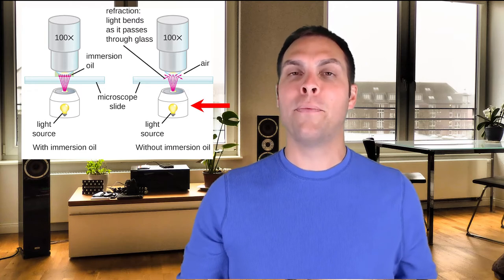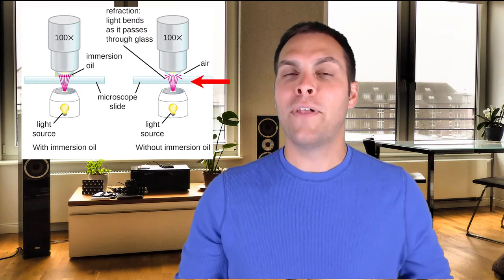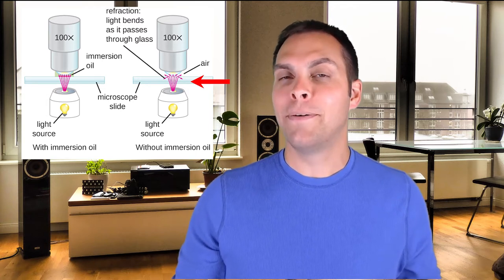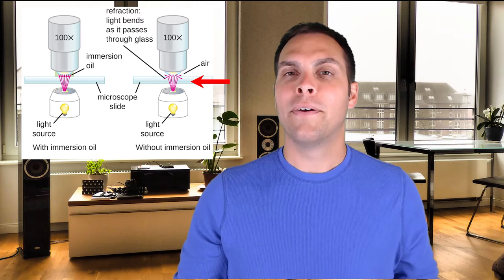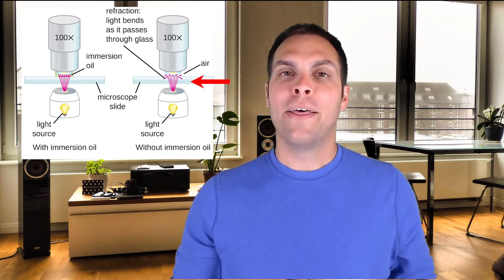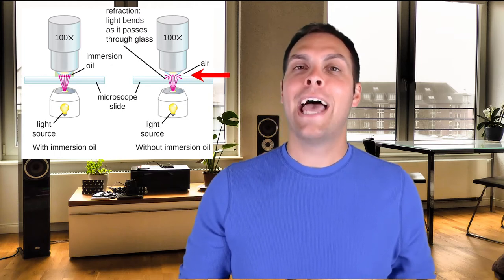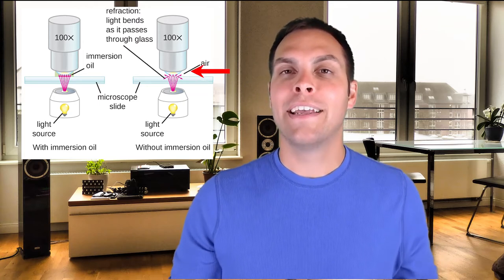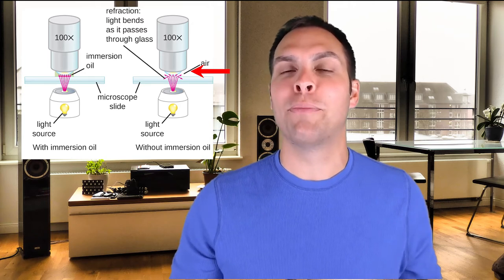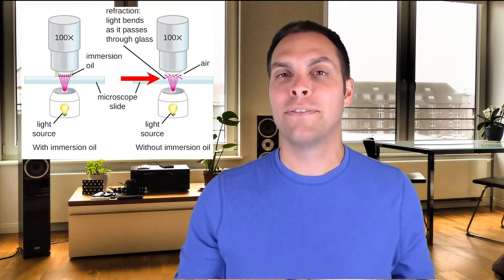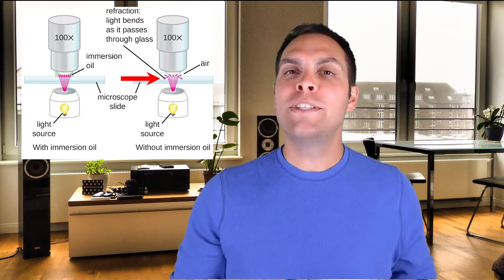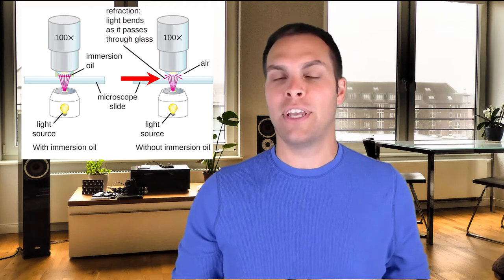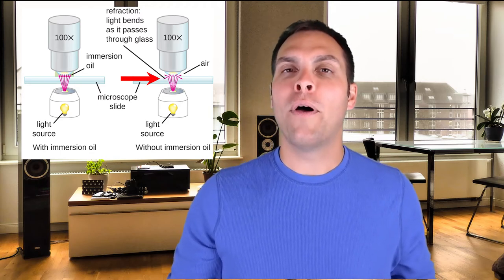In a normal light microscopy experiment, light comes from the light source, passes through the sample on glass, and bends as it enters the glass — this is called refraction. It then goes back through air, refracts again, and bends yet again through the objective lens glass. Every time light bends, you lose a little clarity as some of the light scatters. So above about 400x magnification, we have to start using immersion oil.